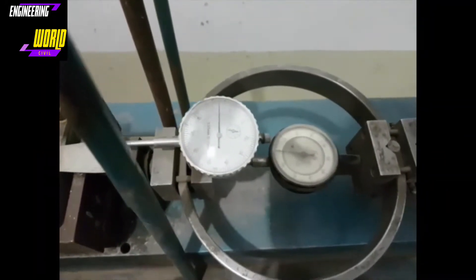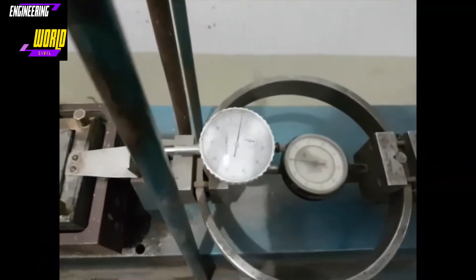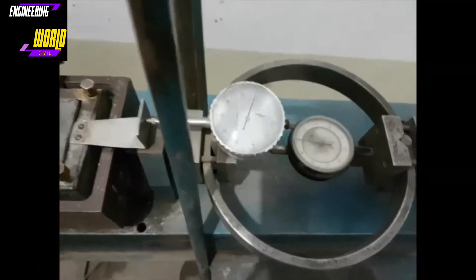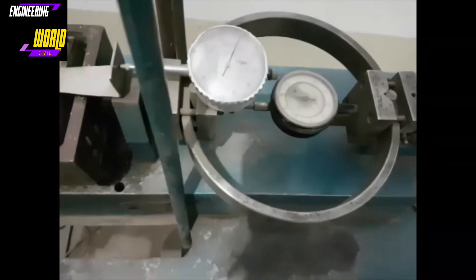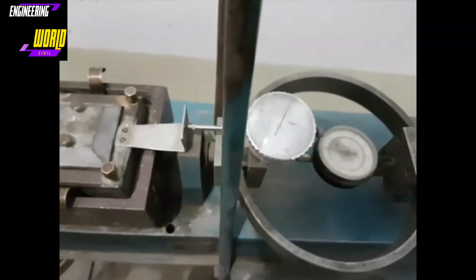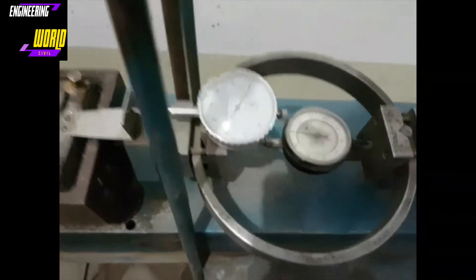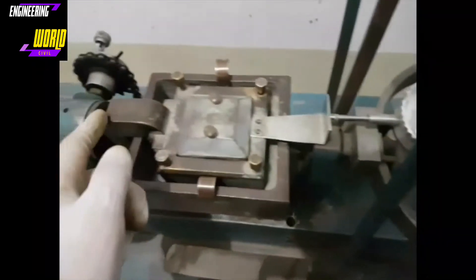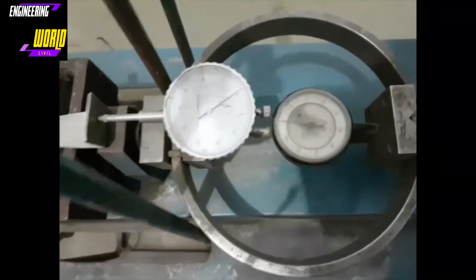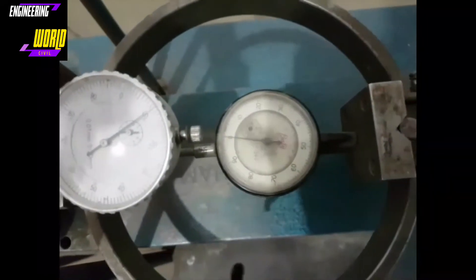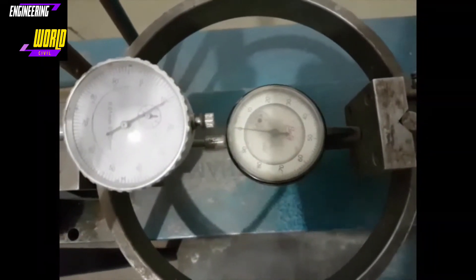As you can see, the deflection dial gauge has started to move. This means that this is now in contact with this, and as the jack pushes the box forward, the upper section is now pushing against the needle. But we can't start the experiment until we see movement in the load dial gauge.